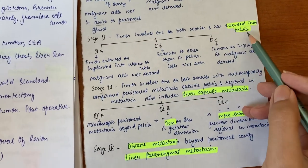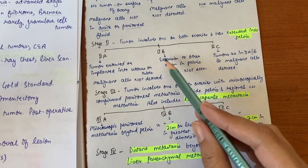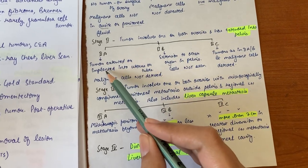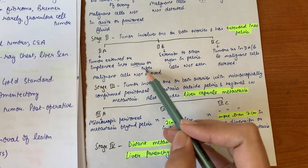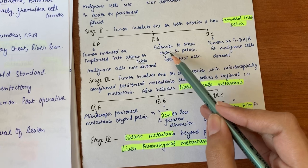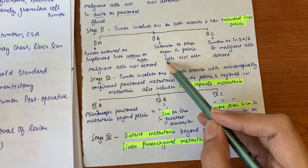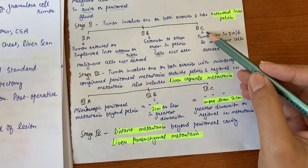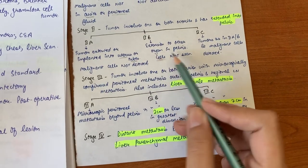Stage two is further subdivided into 2a, 2b, and 2c. In 2a, tumor is extended or implanted into uterus or tubes - it involves uterus or tubes but malignant cells are not detected in ascites or peritoneal fluid. In 2b, extension is there to other organs in pelvis and we do not have malignant cells in ascitic fluid. But in 2c we have tumors as in 2a and 2b that is in the pelvis, and malignant cells are detected in ascitic fluid.